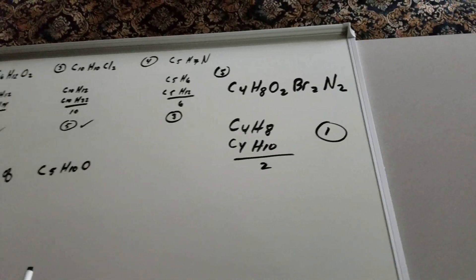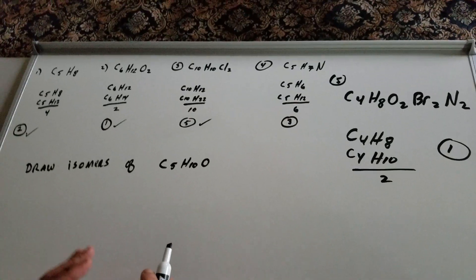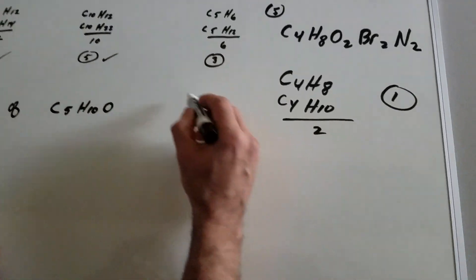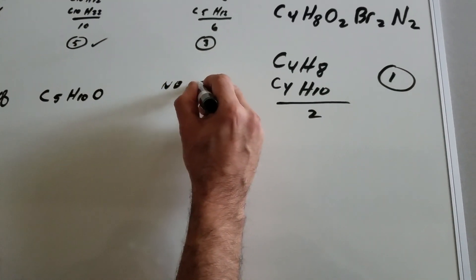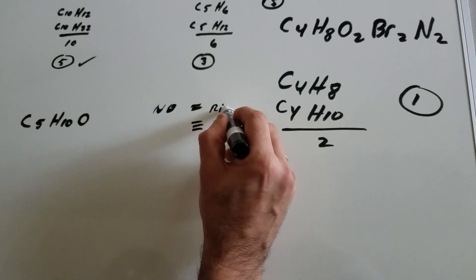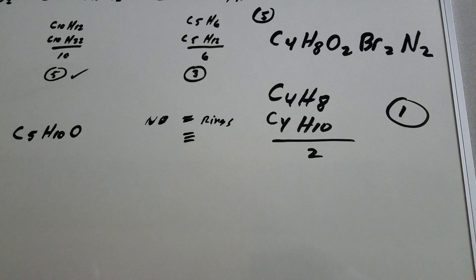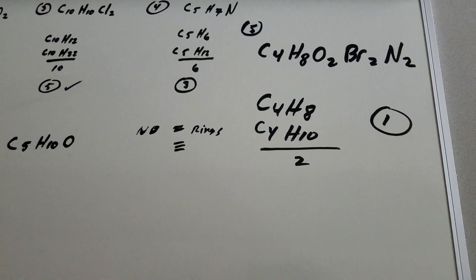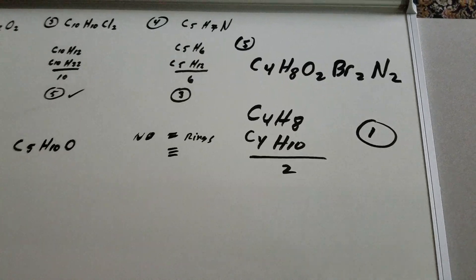Now, what does this mean? If you have a degree of unsaturation of 0, 0 means that there's going to be no double bonds present, no triple bonds present, and no rings present. It would only be single bonds. If the degree of unsaturation is 1, that means the compound could contain a double bond, or it could contain a ring.